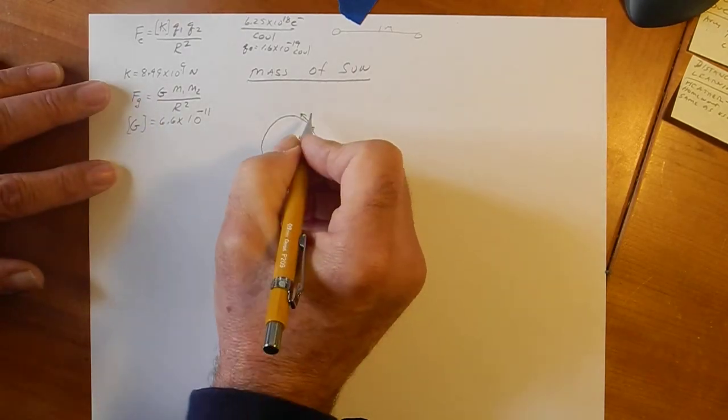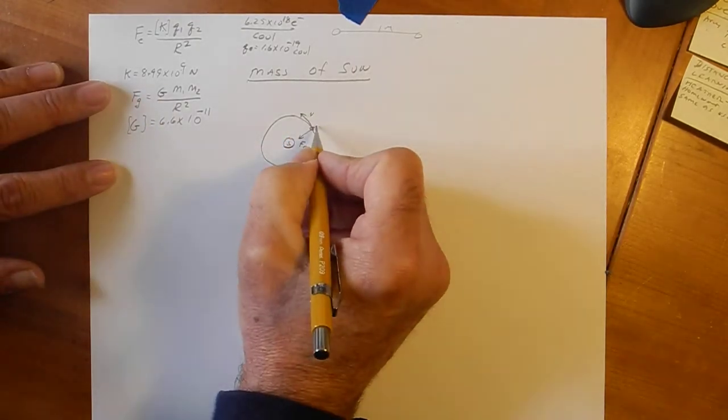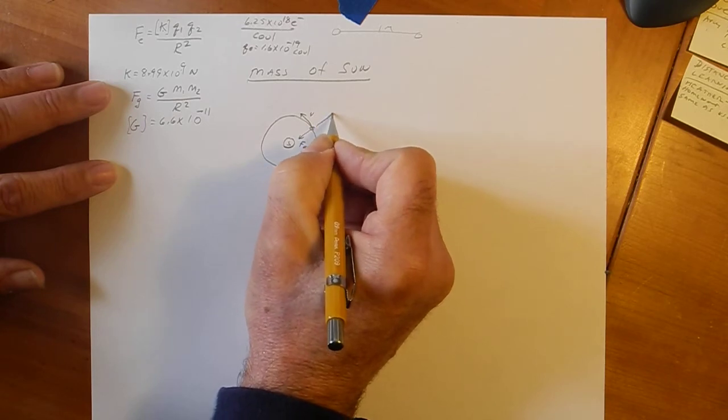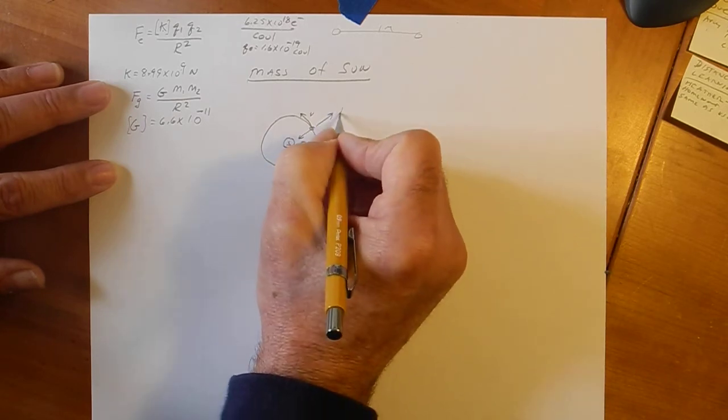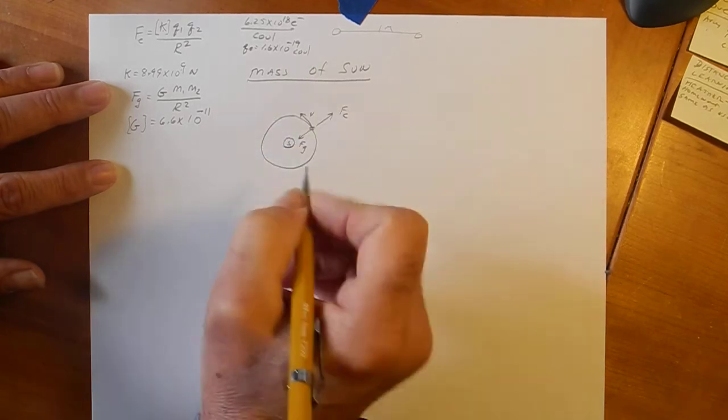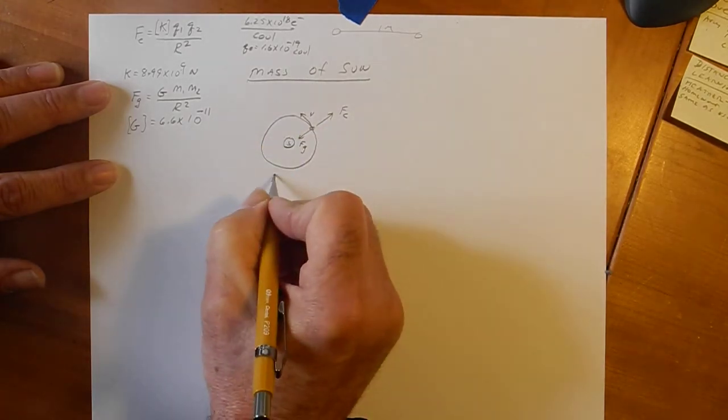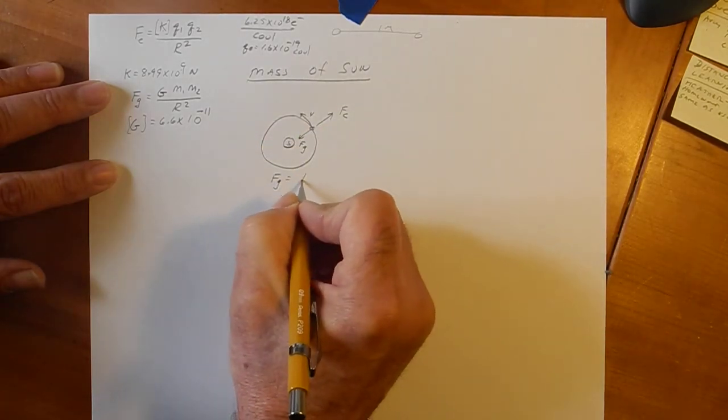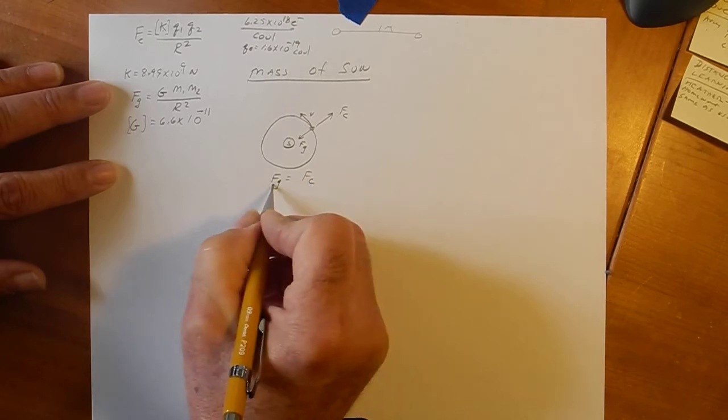Well, why don't we crash in the sun? Well, because we're traveling at some velocity, we must have a centrifugal force that-a-way. These things equal each other. So, F sub G must equal F sub C.